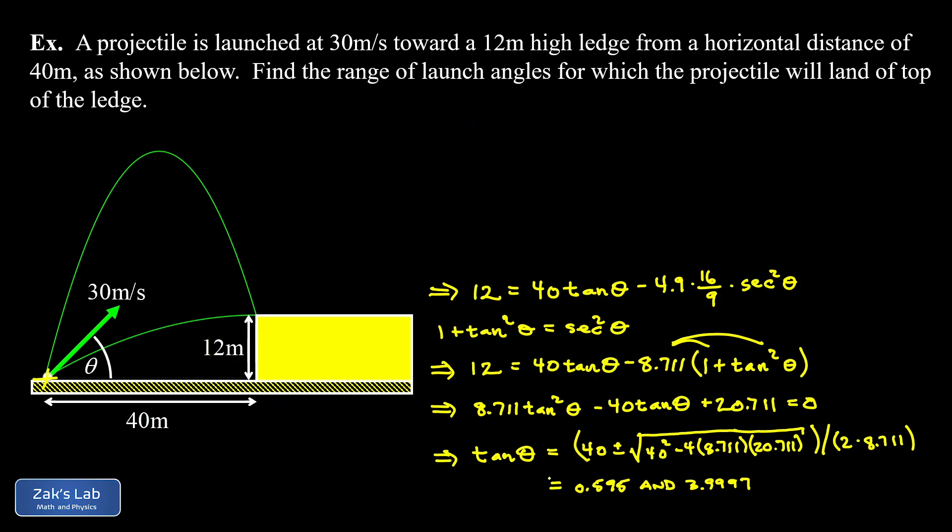I have tan(θ) equal to either one of these numbers. Those are going to correspond to our minimum and maximum values of θ. So θ_min, my small angle is going to be the angle whose tangent